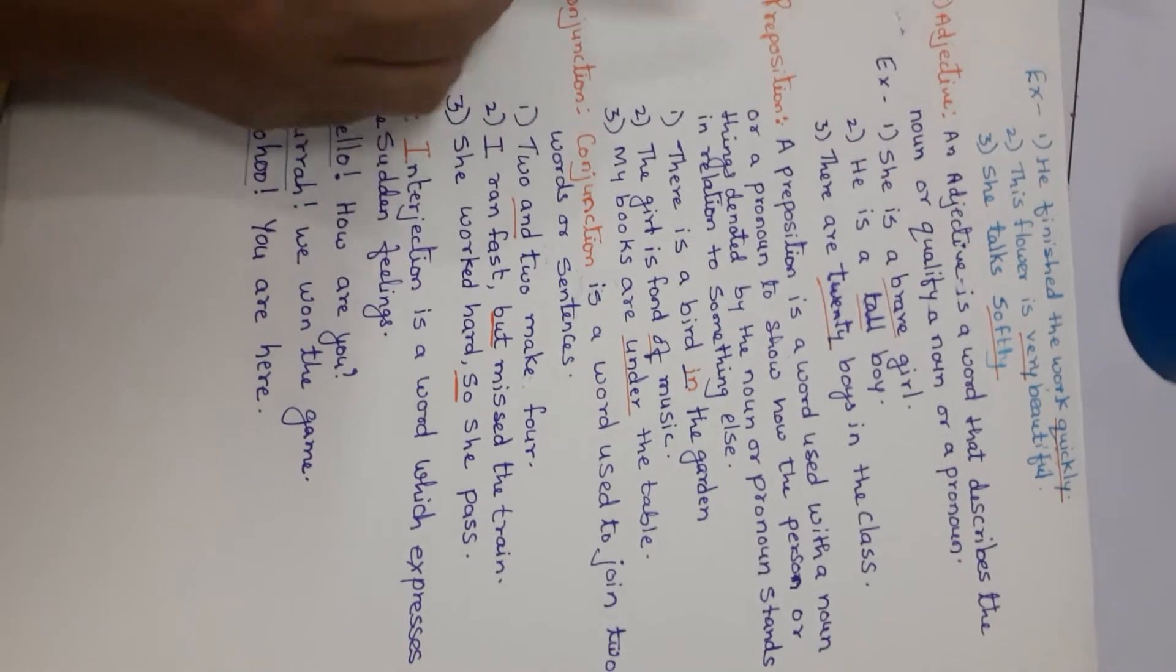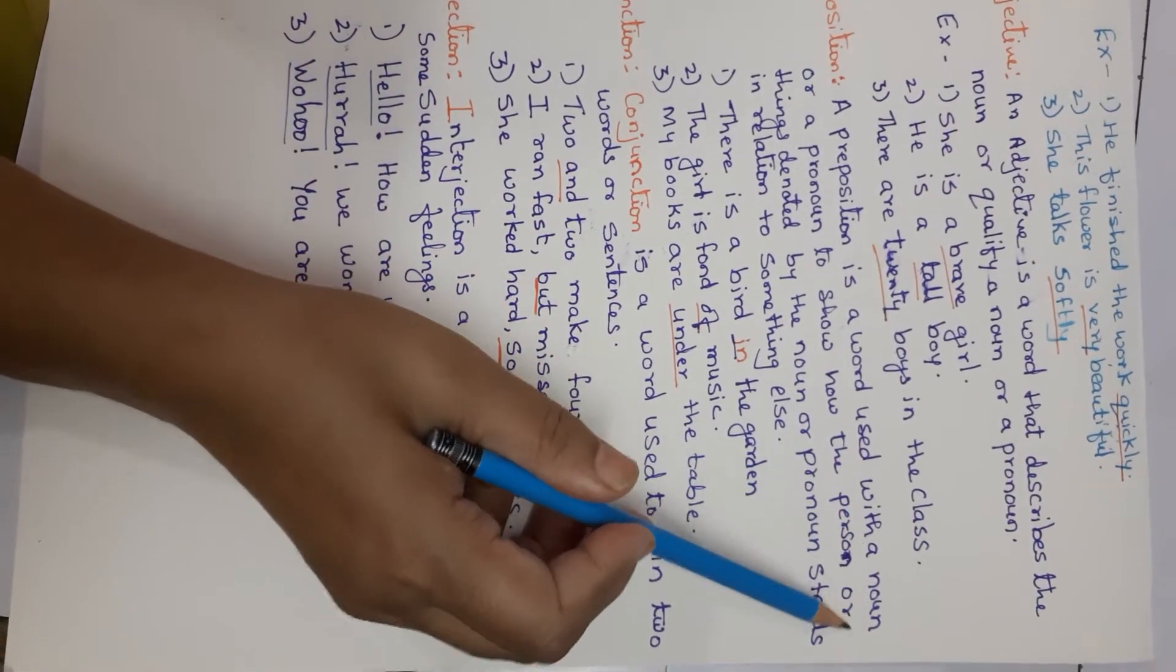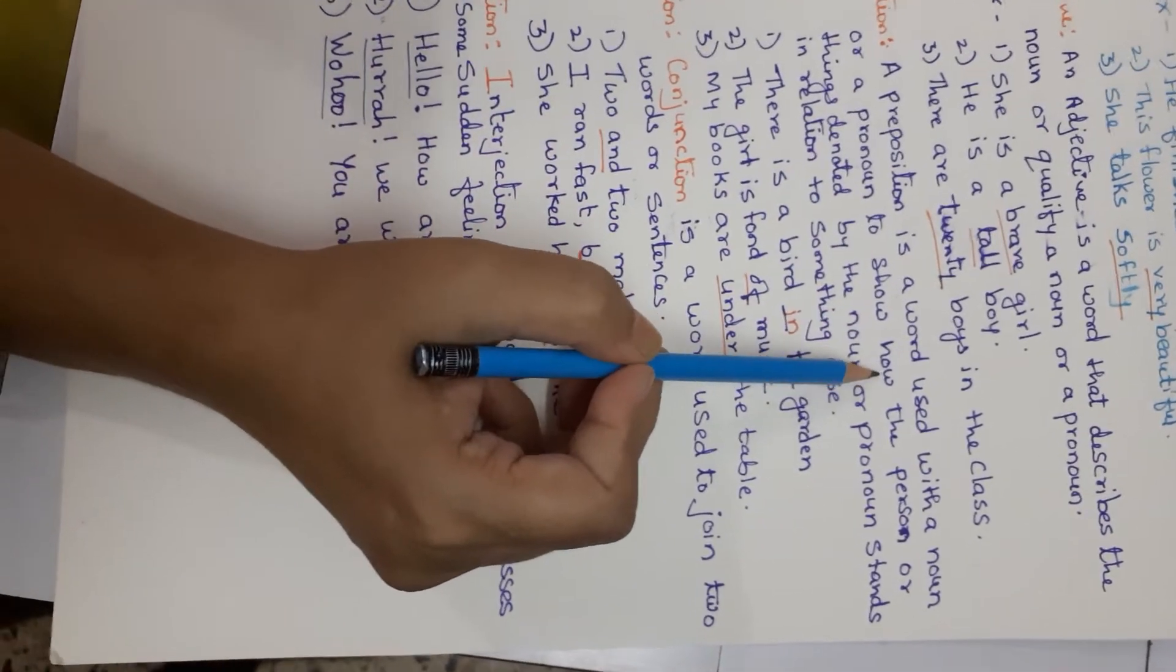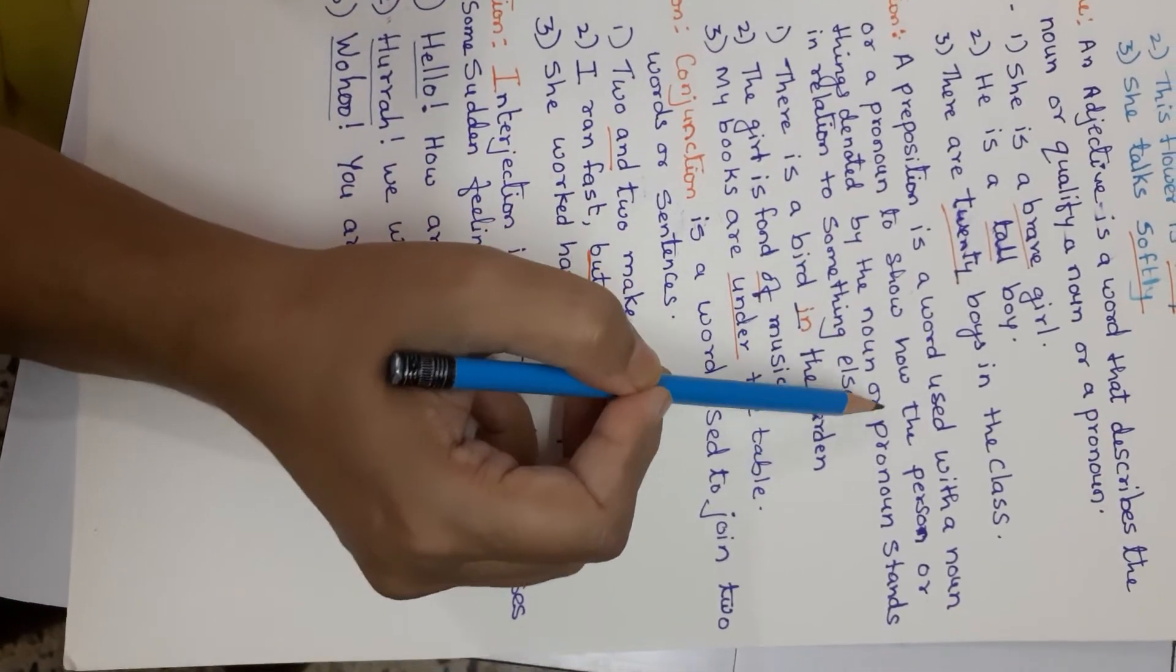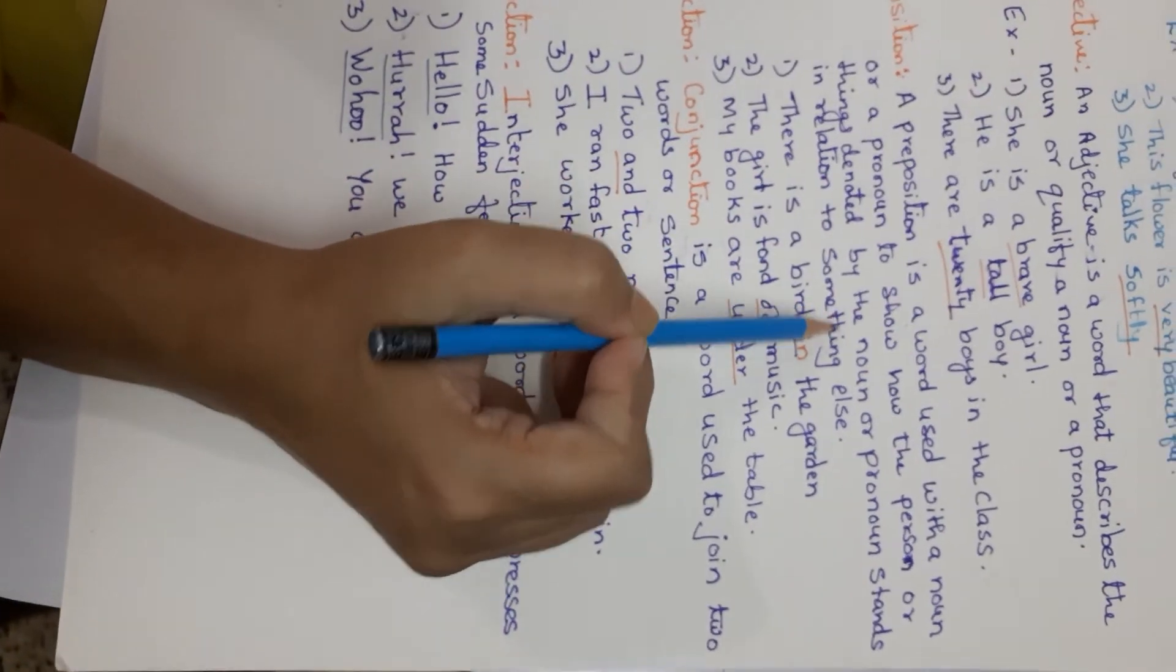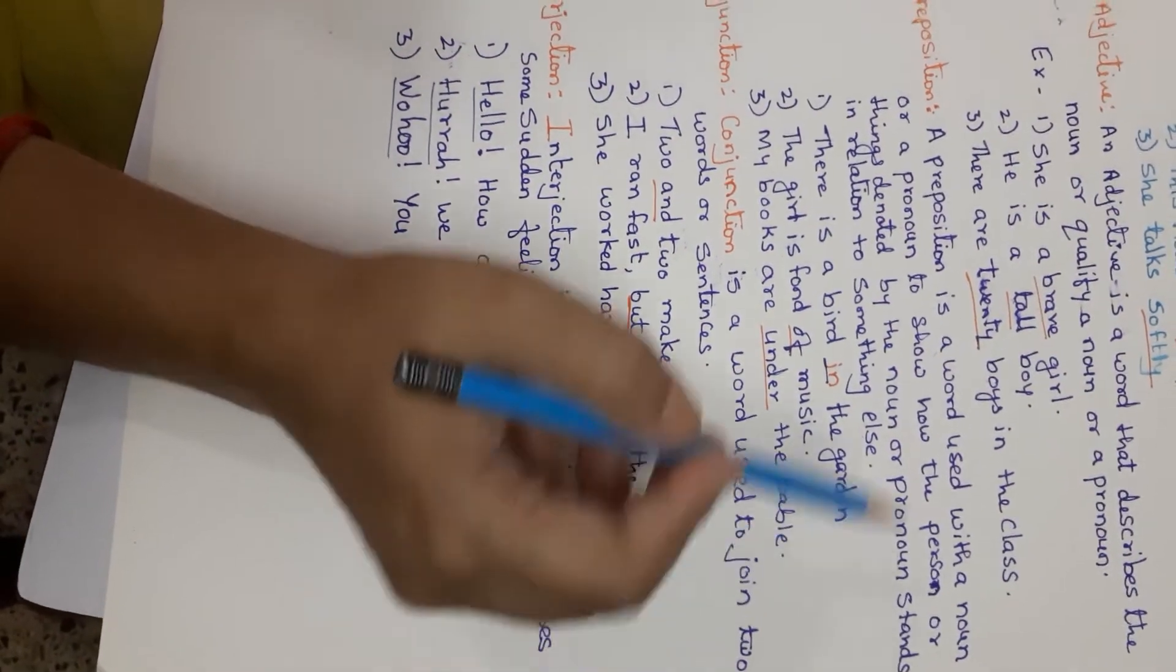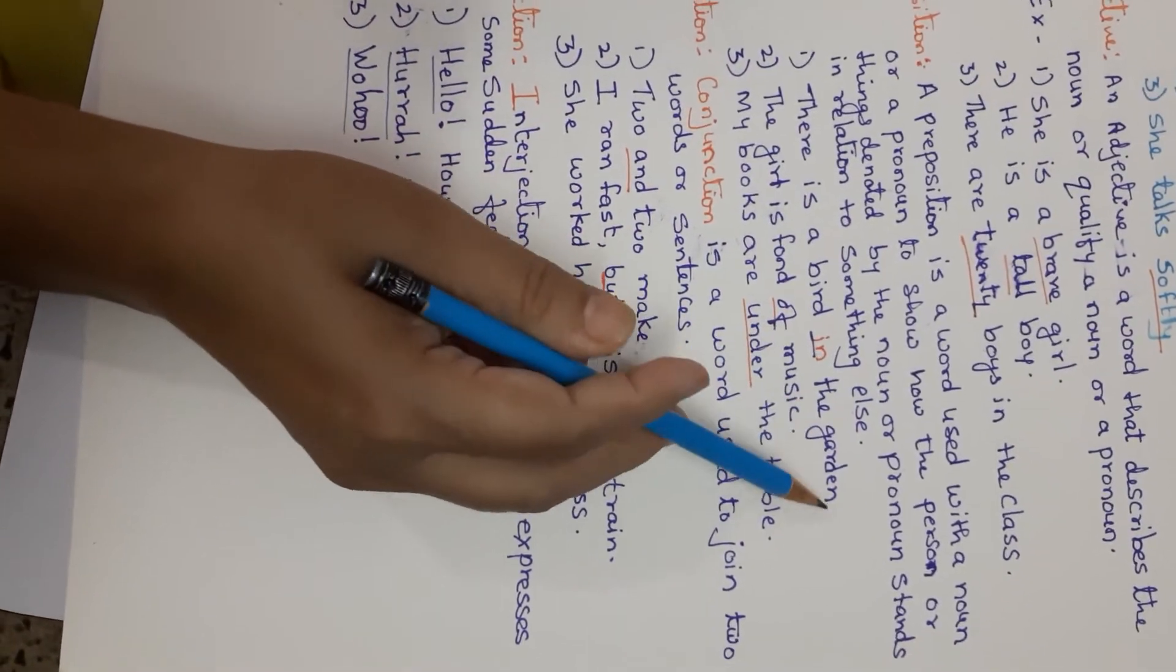Preposition. Preposition is a word used with a noun or a pronoun to show how the person or thing denoted by the noun or pronoun stands in relation to something else. Here the relation is told. There is a bird in the garden.